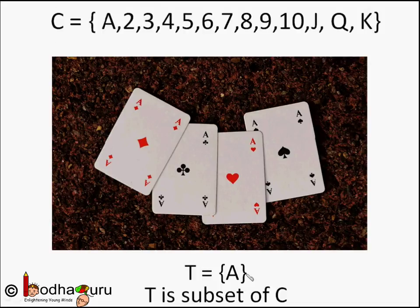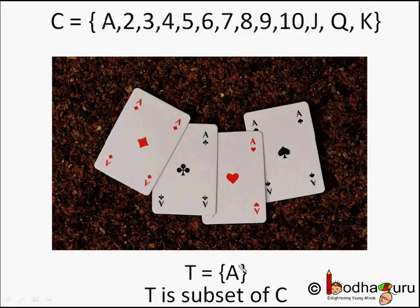So let us call a set of aces as a new set called T. So we can say the set of aces, that is set T which contains the element A, is a subset of set C or part of set C. Because all the elements of set T are part of set C and set C has some more elements. So set T is a subset of set C.